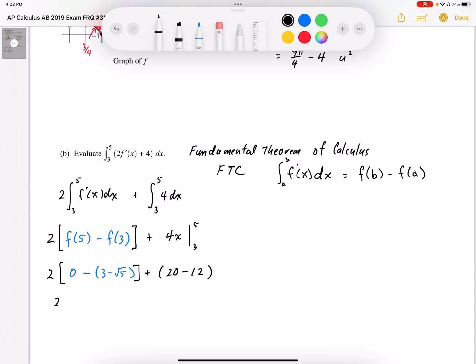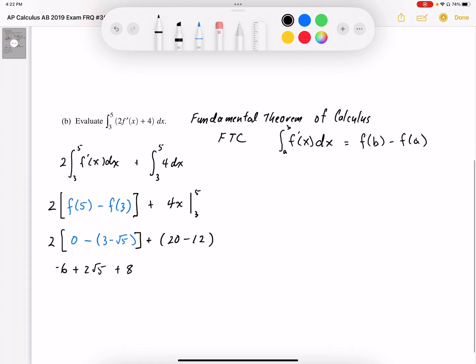Calculating this out, 2 times negative 3 is negative 6. Be careful with the signs here—that's a double negative, so it becomes plus 2 root 5. So we get -6 + 2√5 + 8. Combining like terms, the value of the integral is 2 + 2√5.